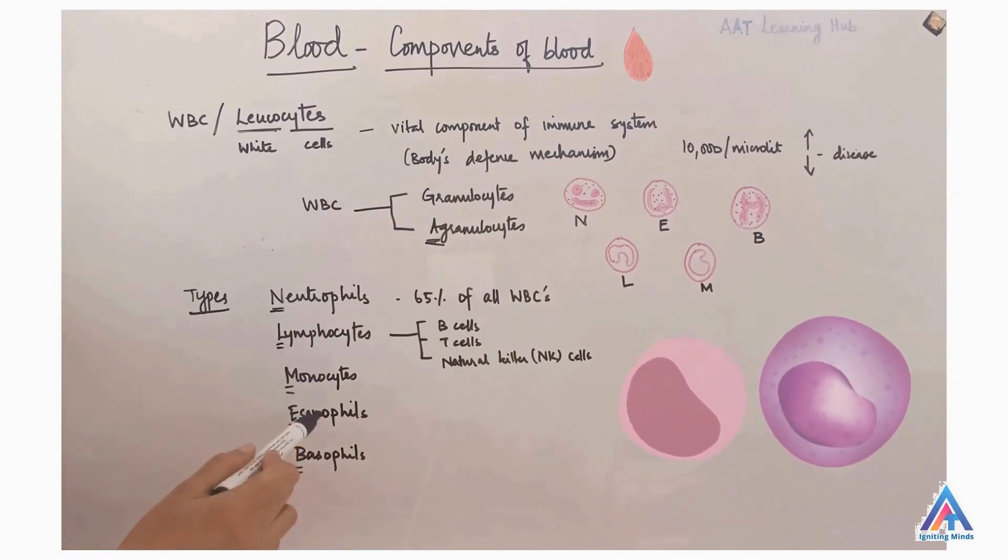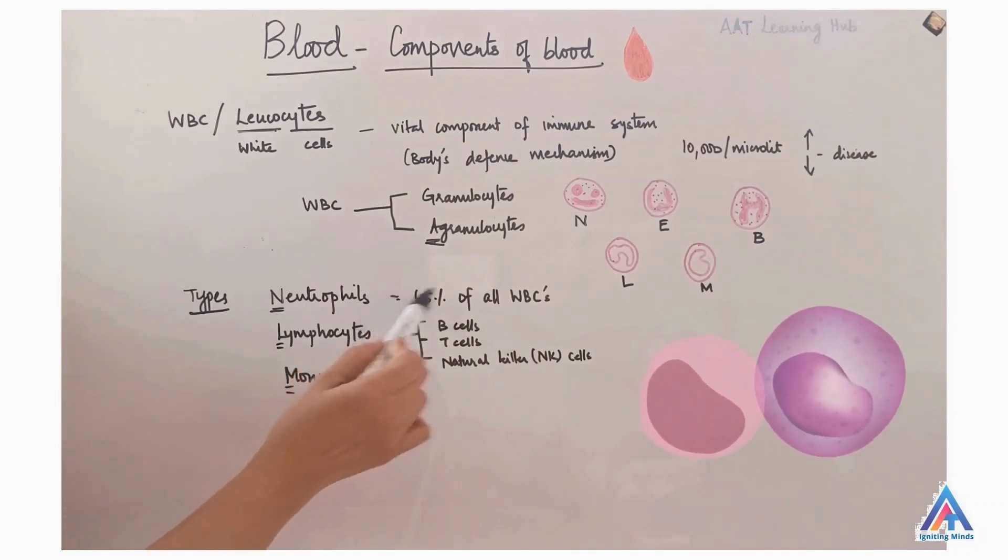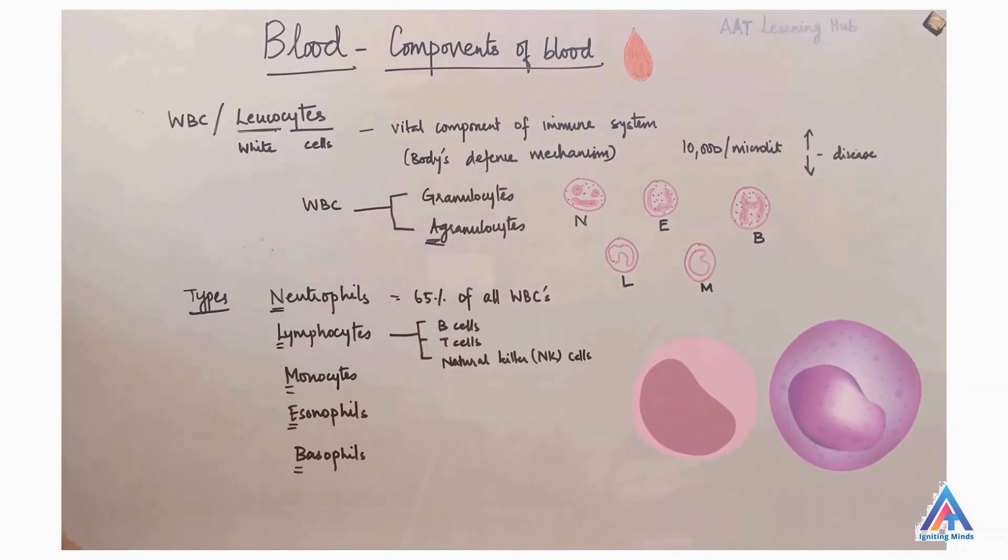Neutrophils, lymphocytes, monocytes, eosinophils and basophils. Neutrophils make up around 65% of all WBCs. Lymphocytes are further divided into B cells, T cells and natural killer cells. All these are involved in the defense mechanism.